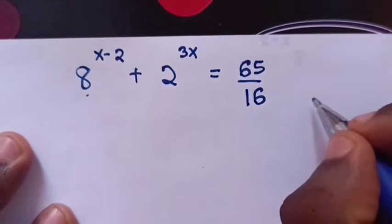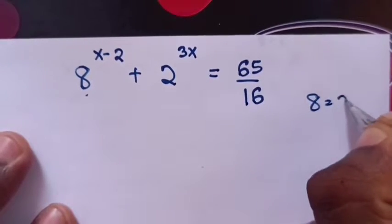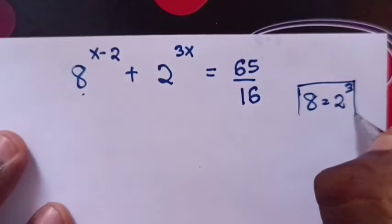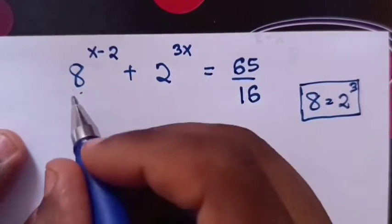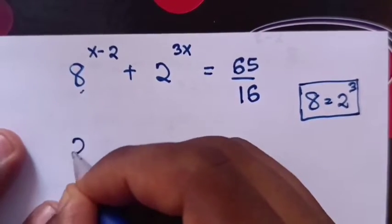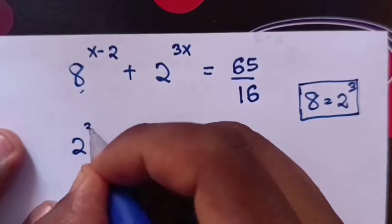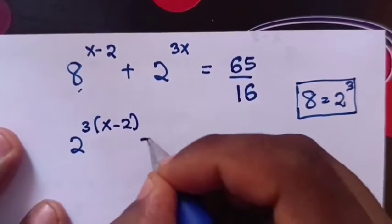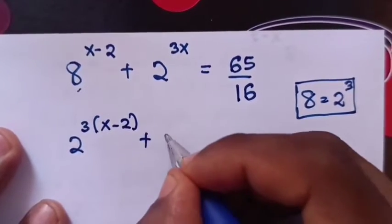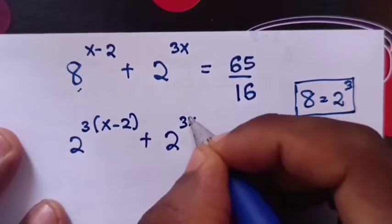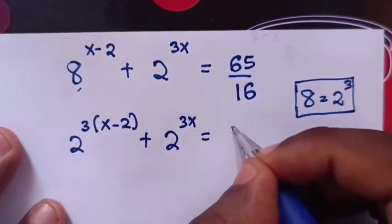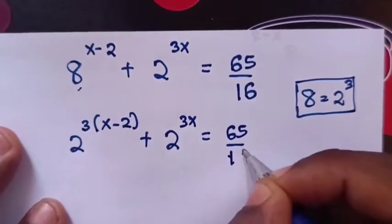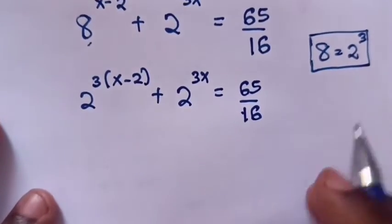8 is the same as 2^3. Therefore, we substitute 2^3 here, so it becomes 2^(3)^(x-2) + 2^(3x) = 65/16.